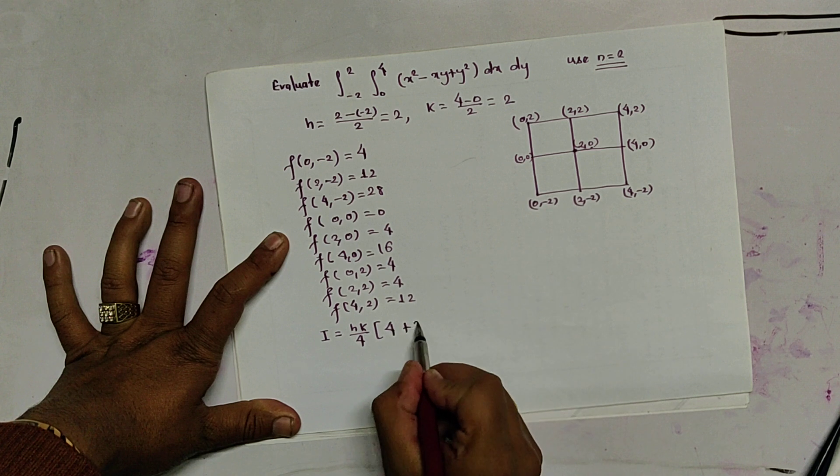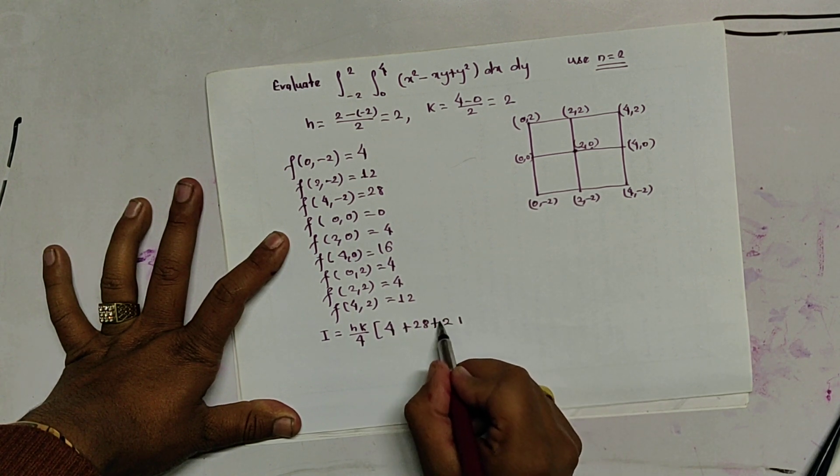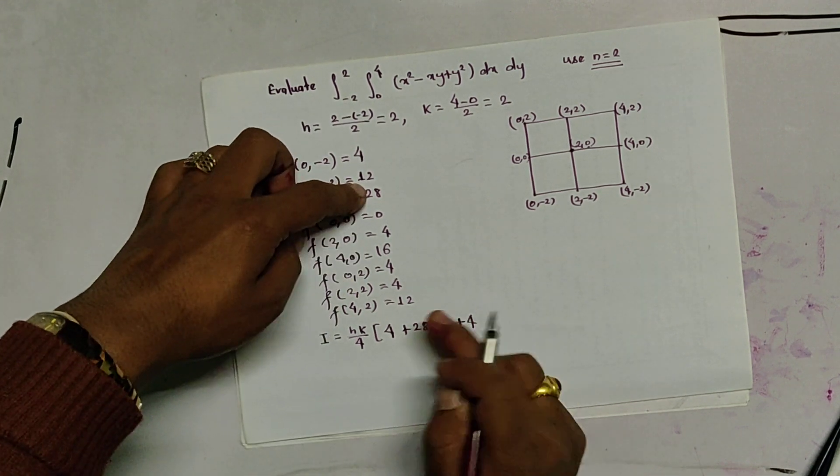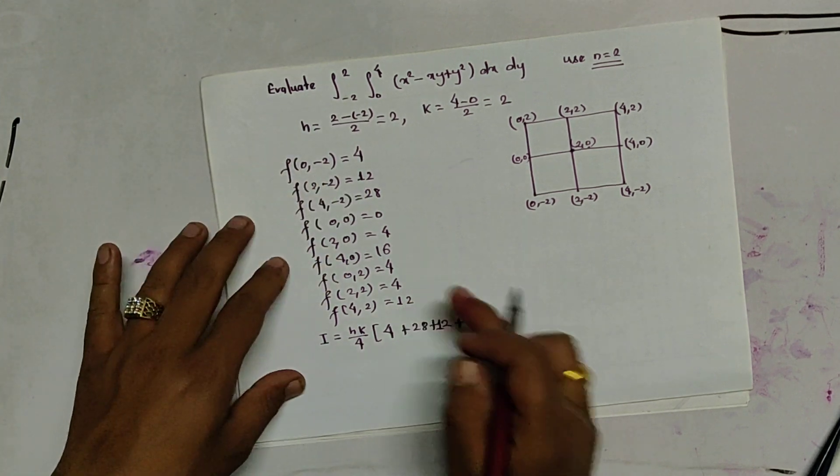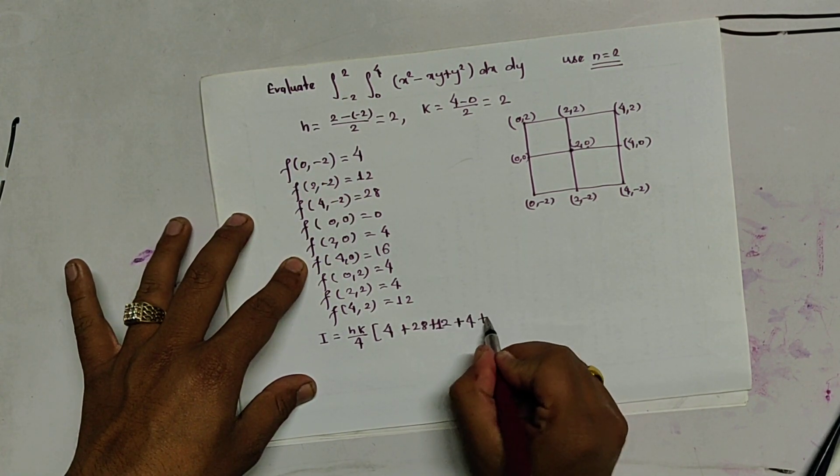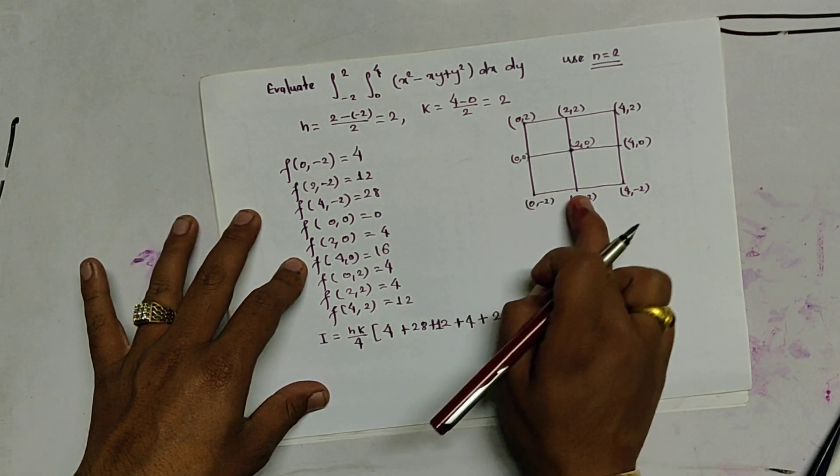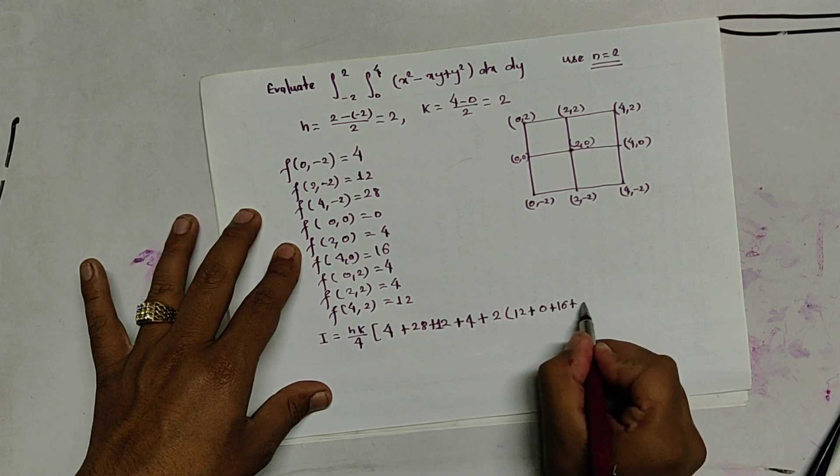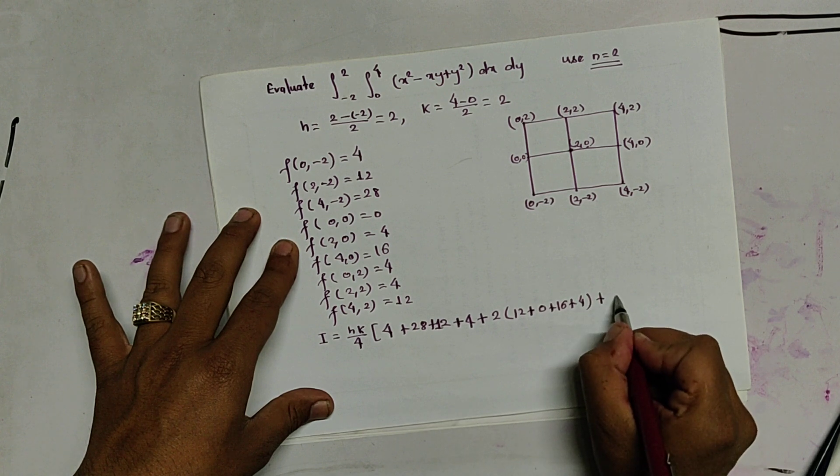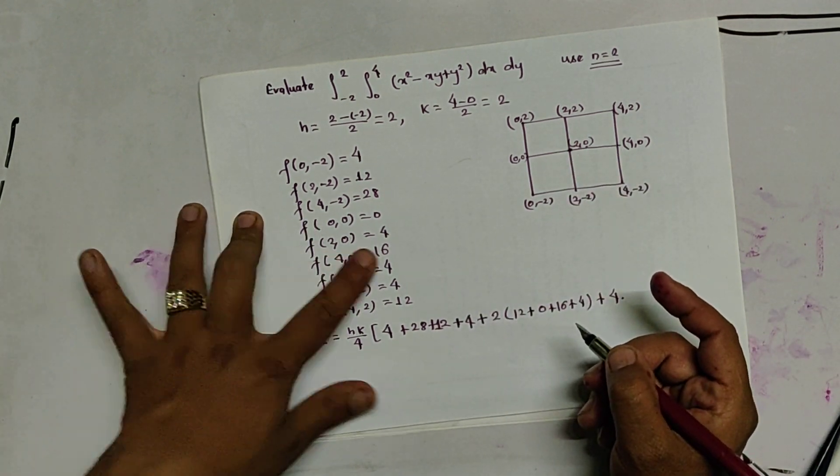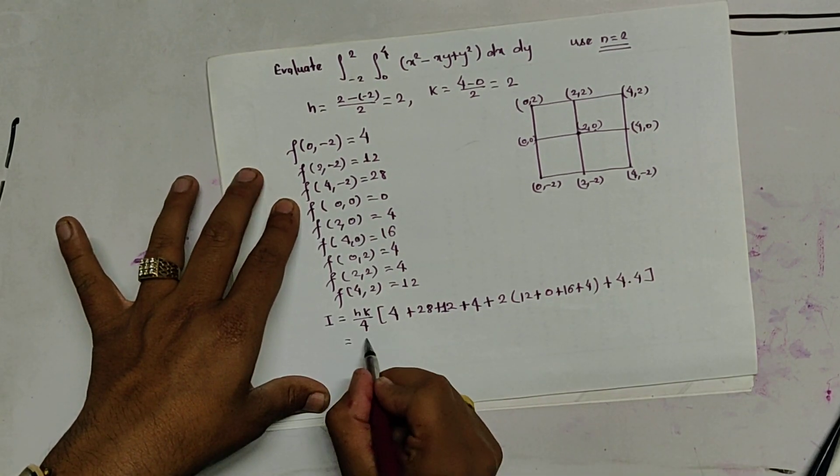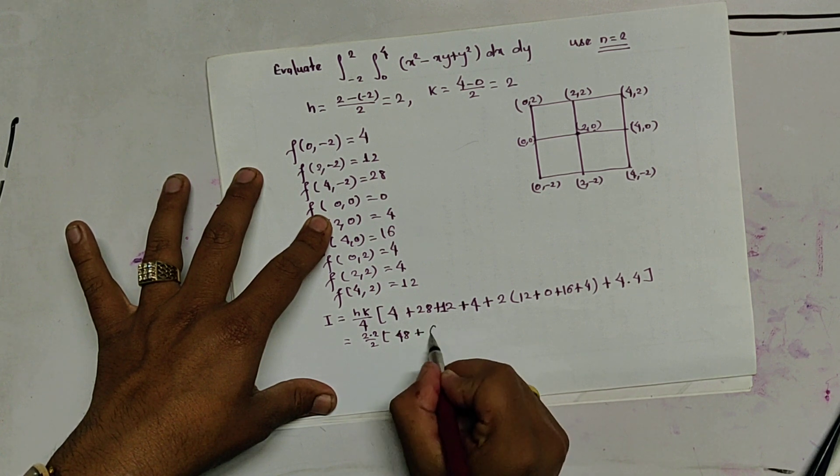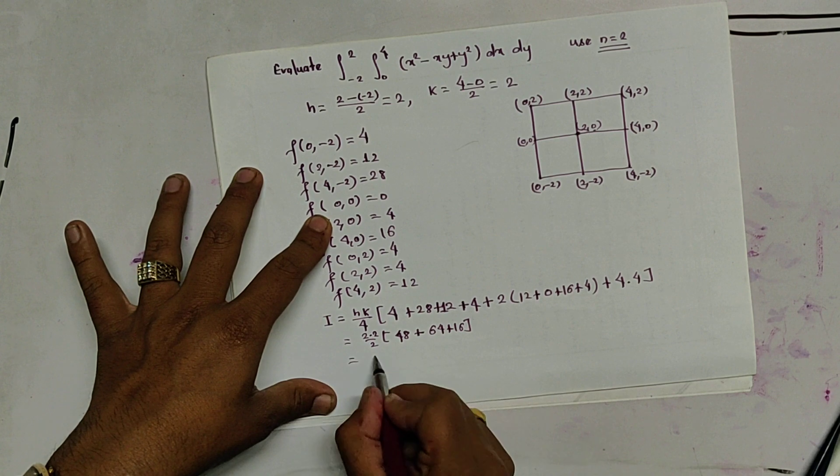So, the values are 4 plus 28 plus 12 plus 4. So, these are the four corners. They are not multiplied by any other terms. Please see the formula if you are confused. And next, these points are multiplied by 2s. So, 2 into 12 plus 0 plus 16 plus 4. And last one is multiplied by 4. Center part is 4 2 0. So, 4 2 0 is 4. And what is the value of h? It is 2, k is also 2. It is 48 plus 64 plus 16. And we get it as 128.